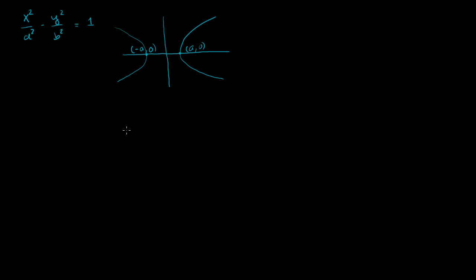What I want to do is figure out a relationship between a and b and the equation of a tangent line. Let's say I have a tangent line that's tangent only at one point, and the equation for this tangent line is y = mx, where m is the slope, plus c. Normally we'd call the y-intercept b, but we've already used b in the equation for the hyperbola, so let's call this c — a little unconventional, but c is the y-intercept.